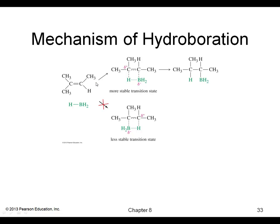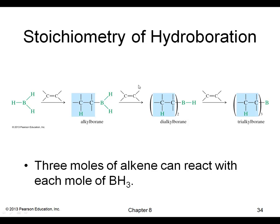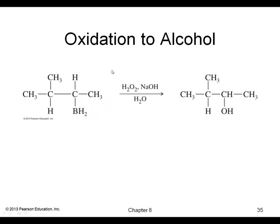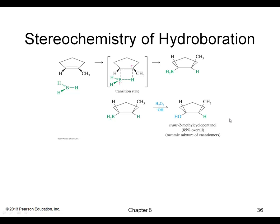Here they show the mechanism of the hydroboration. In the second step, we oxidize the boron using the hydrogen peroxide/OH⁻ reagent to give the alcohol. The stereochemistry of hydroboration gives the syn product — that is, the OH and the hydrogen that was added are on the same side.